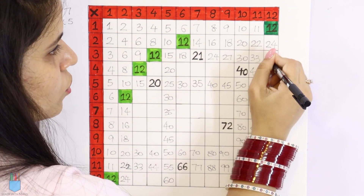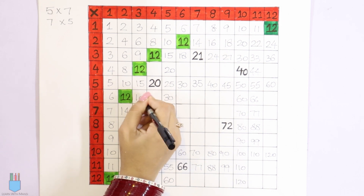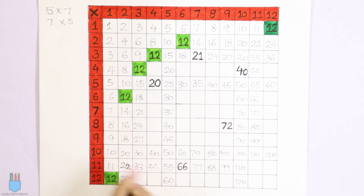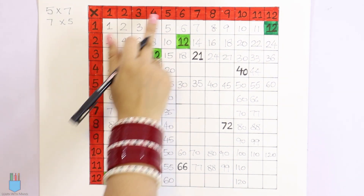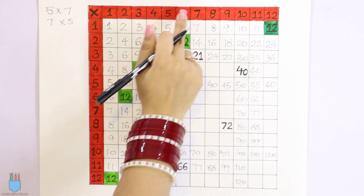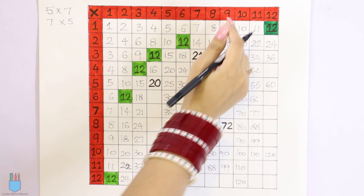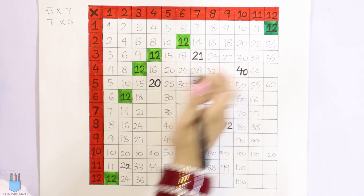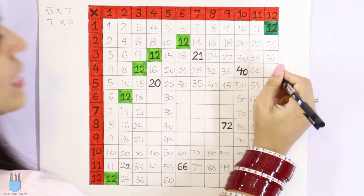12 into 3 is 36. Then 12 into 6 — let's see: 6 fours are 24. Then 7 into 4 is 28. We have 8 and 4: 8 into 4 is 32. 9 into 4 is 36. Then 40, 44 — already filled. So 12 into 4: 12 into 4 is 48.